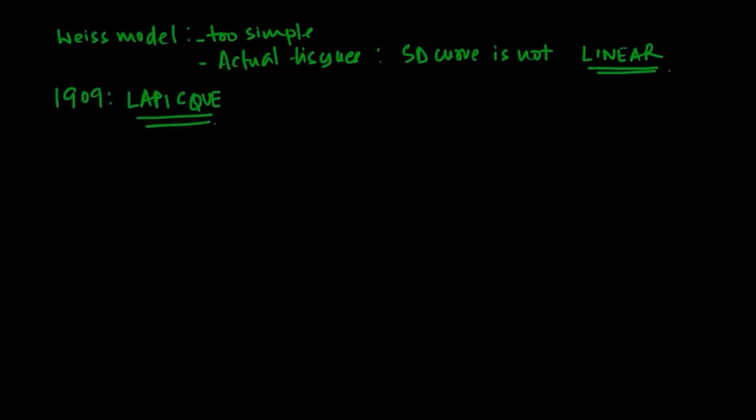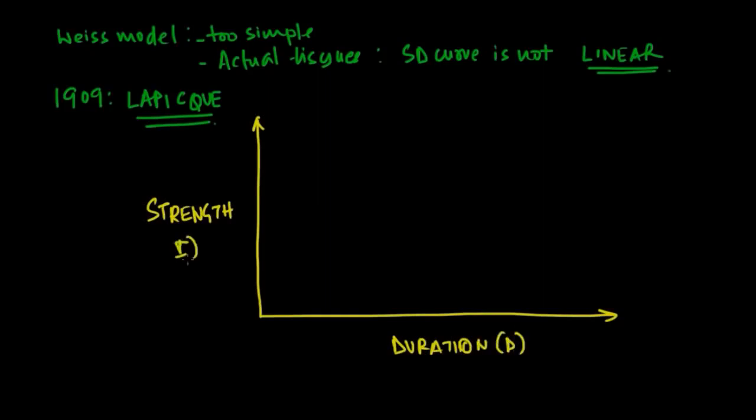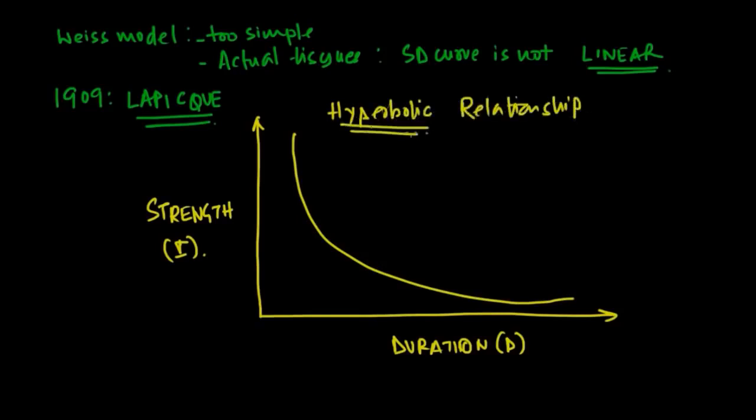In 1909, Lapicque did his experiments in which he plotted again the strength and duration curve on the y and x-axis respectively, and he found that the relationship between these two variables essentially was hyperbolic.